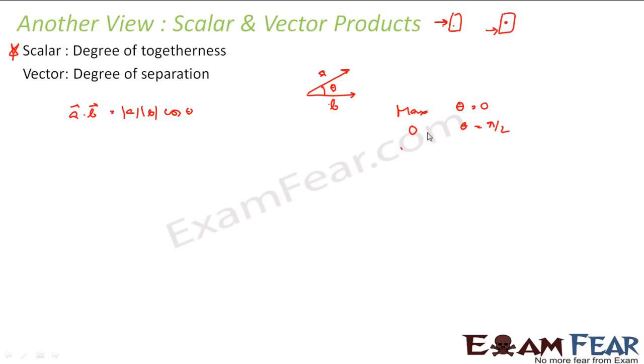This becomes minimum, that is negative, when theta is pi. They are totally separated. So if I have vector a here and vector b here, both same a and b, I get the maximum product. If they are like this, a and b, I get 0 as the product. If a is here and b is here, then what you get is a negative value.